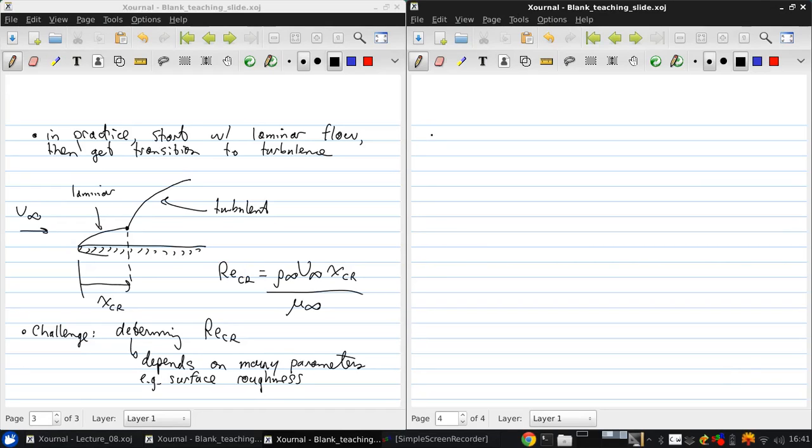In the previous part of the lecture, we talked about skin friction drag caused by shear stress. But the other kind of drag that can be very significant depending on the situation is pressure drag, which is primarily caused by flow separation.